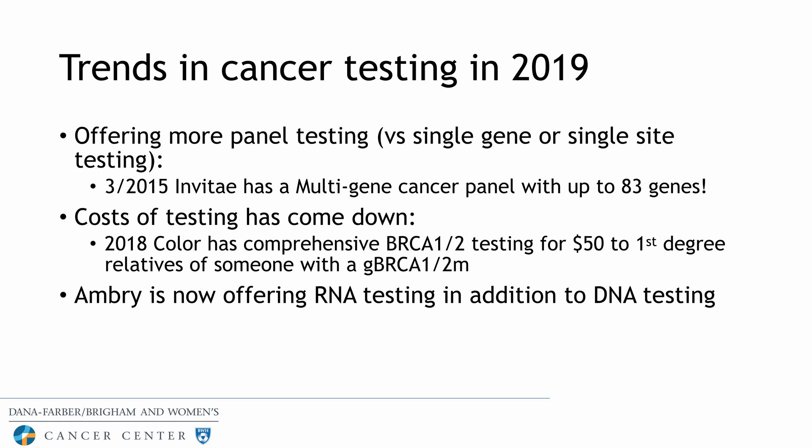Ambry is also offering RNA testing in addition to DNA testing. For example, if a family clearly looks like they have a hereditary cancer syndrome but DNA testing is negative, we may detect a mutation in the RNA. Since DNA is transcribed to RNA and then translated to protein, an abnormality in the RNA can also create an abnormal protein and result in a hereditary cancer syndrome. So we are now doing RNA testing in select families when DNA testing is negative.